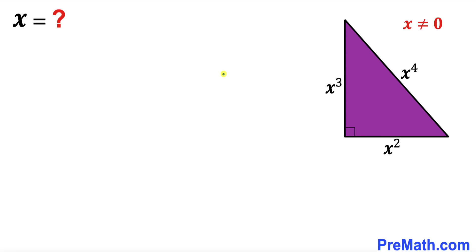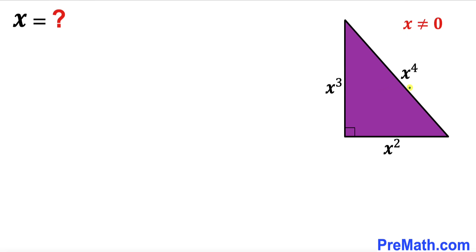Welcome to pre-math. In this video we have got a right triangle such that its hypotenuse is x⁴, whereas its two other legs are x² and x³. Make sure that x is not equal to 0, otherwise this triangle won't exist, and now our task is to find the value of x.